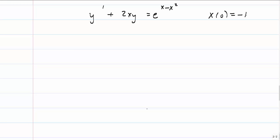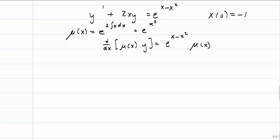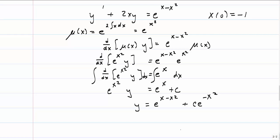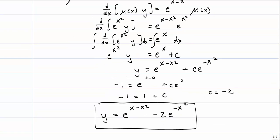Let's try another example: y' + 2xy = e^(x - x²), with an initial condition. Finding the integration factor gives mu(x) = e^(x²). Multiplying both sides by mu(x) and substituting, then simplifying the right-hand side, we integrate both sides with respect to x. Solving for y gives the general solution. Applying the initial condition, we find c = -2, giving the final solution to the initial value problem y' + 2xy = e^(x - x²).